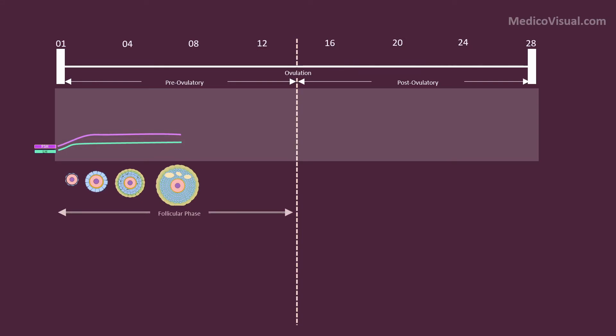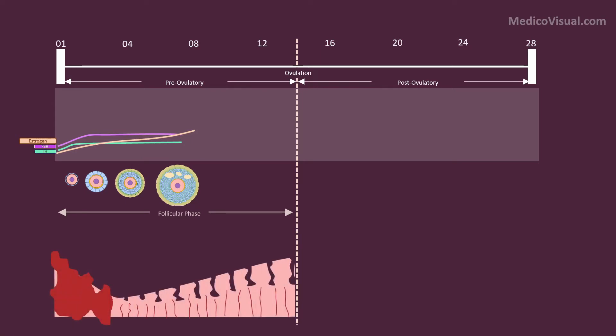This follicle is growing in size and producing more and more estrogen, so estrogen levels start increasing. In the uterus, in the initial days there is bleeding from the previous cycle—that is menstruation. Then, under the influence of estrogen, it starts proliferating. We call it the proliferative phase of the uterine cycle.